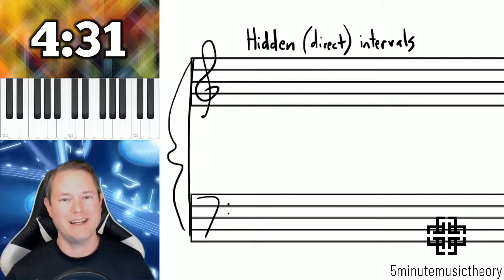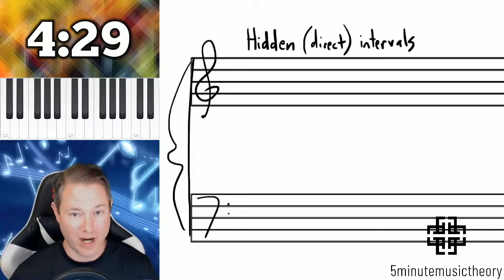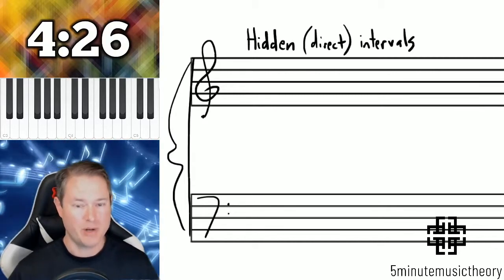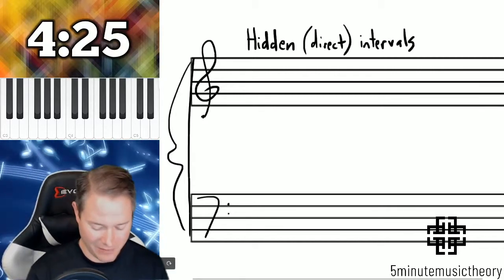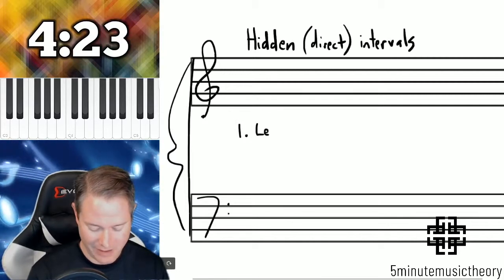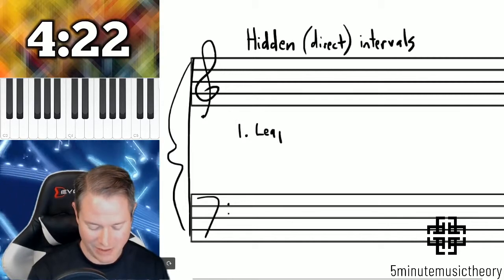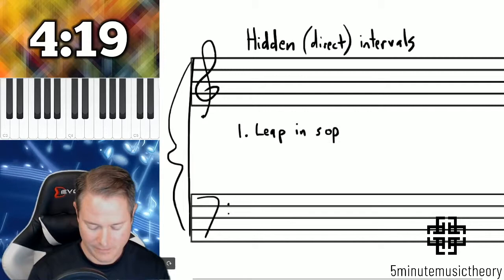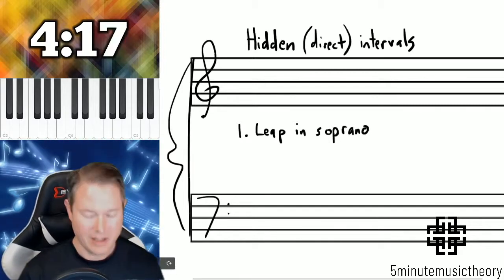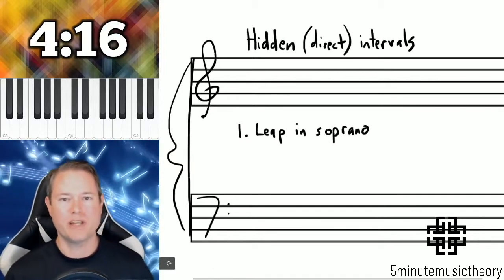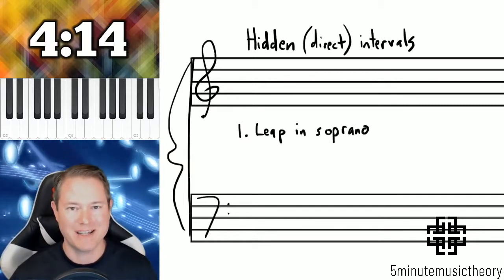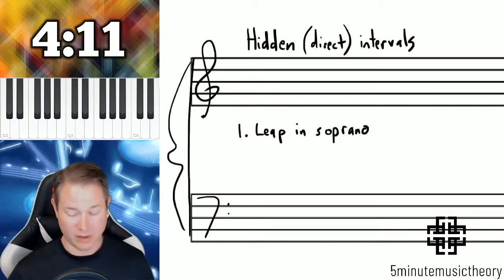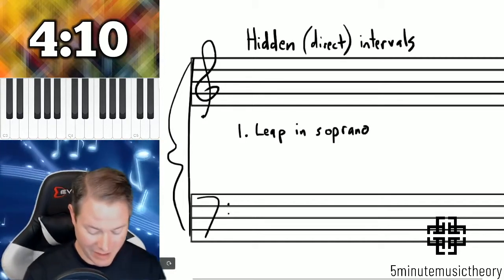When writing, it's very easy to accidentally write hidden intervals, but when doing error detection they're pretty easy to find because the first step we need to have is a leap in the soprano. If there's no leap involved — if the soprano is moving by step — then there's no error there, as long as we're looking for these hidden intervals.